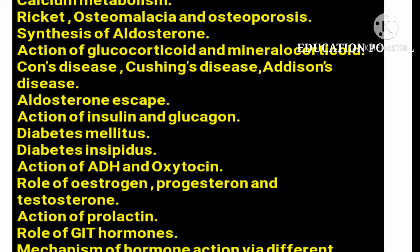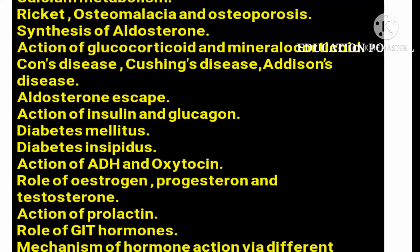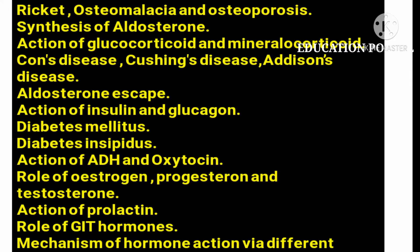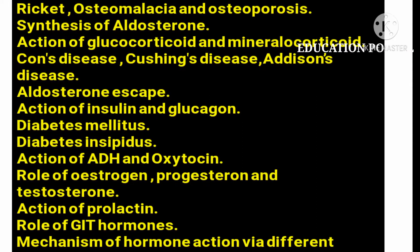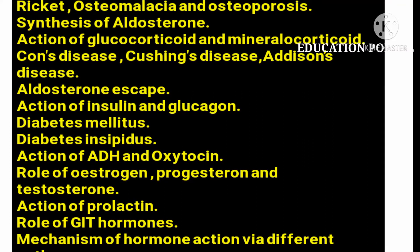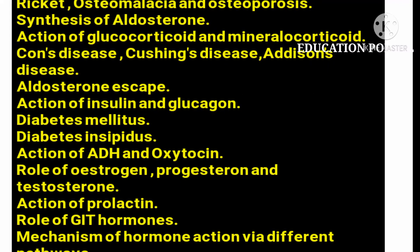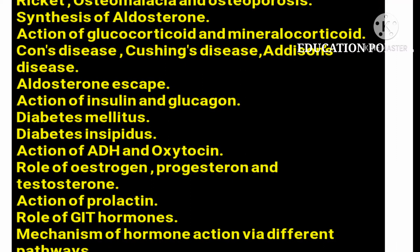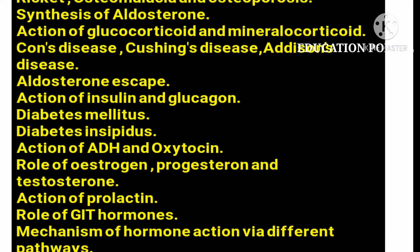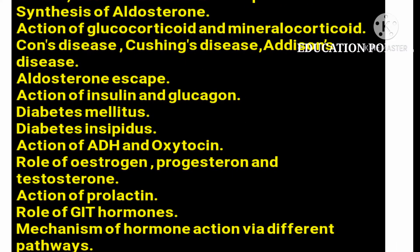The next important diseases are Conn's disease, Cushing's disease, and Addison's disease. Always remember that moon-like face is a feature of Cushing's disease — this is a very important diagnostic point. You may be asked: moon-like face is a feature of which disease? The answer is Cushing's disease.